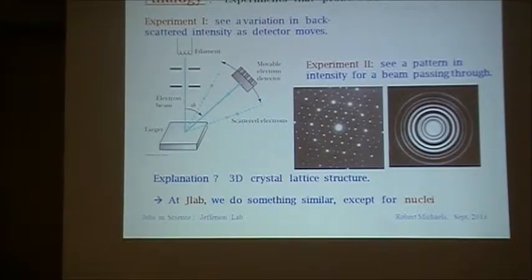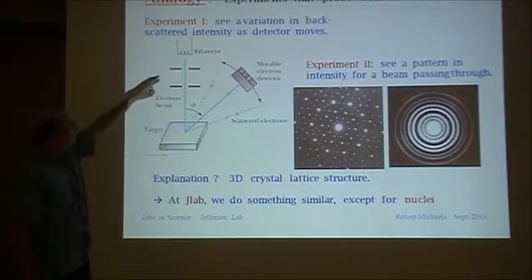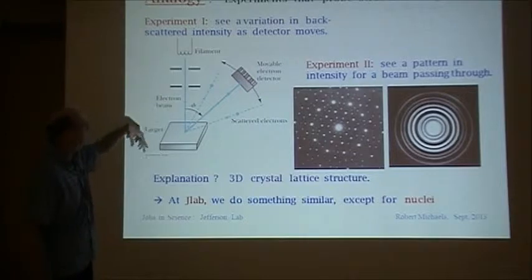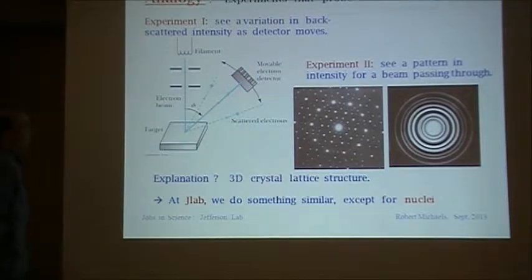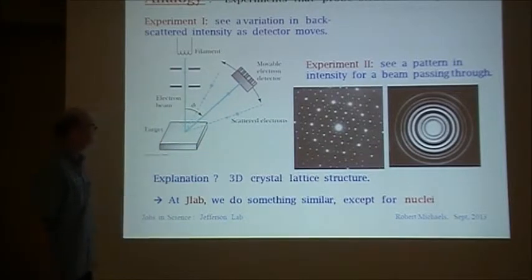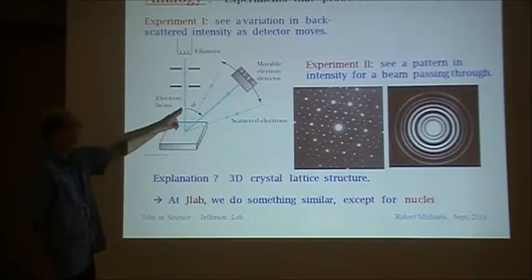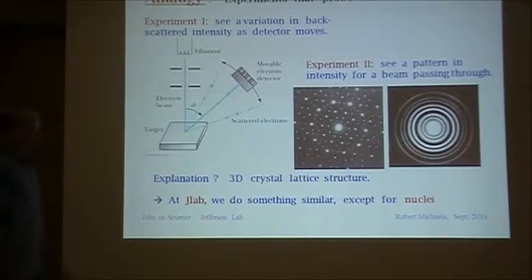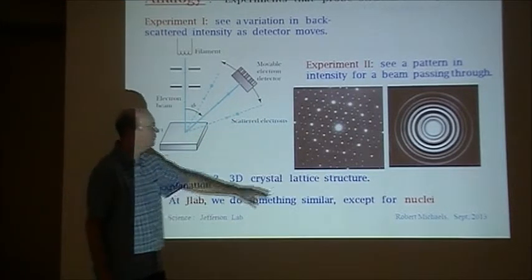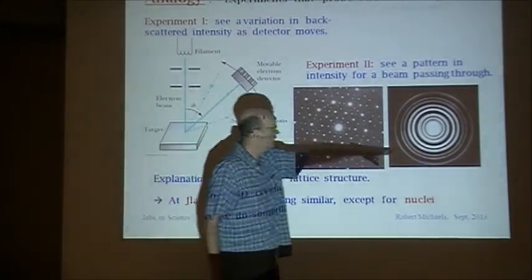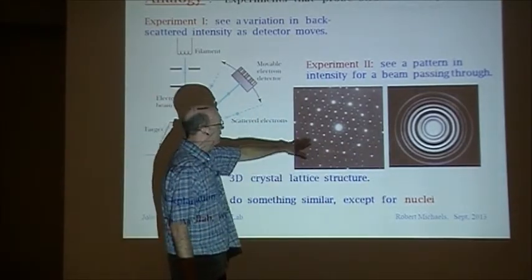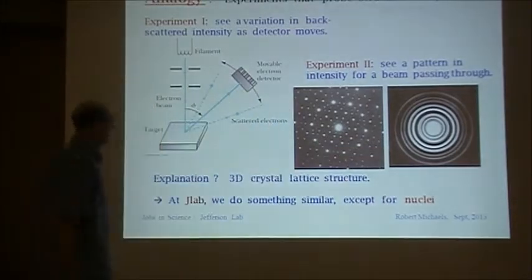Let me give you an analogy to what we do. This is not what we do at Jefferson Lab, just to give you the idea. Suppose you wanted to do experiments that study the structure of crystals. For example, you want to know the structure of DNA. What kind of things could you do? Well, here's one experiment. You could shoot an electron beam. You make the electrons by heating a filament and then accelerating the electrons through some voltage. The electrons hit a target. Some of them backscatter, and then you have a detector. You move the detector around to see how the intensity of what you see varies with this angle phi. Another experiment you could do would be pass the beam through some material and look at what comes out the other side. This is an intensity pattern you see. This would be for a regular crystal. This would be for a powder of crystals.